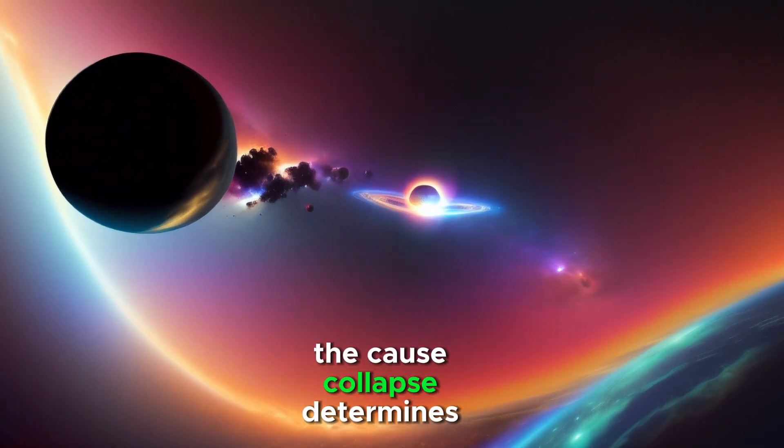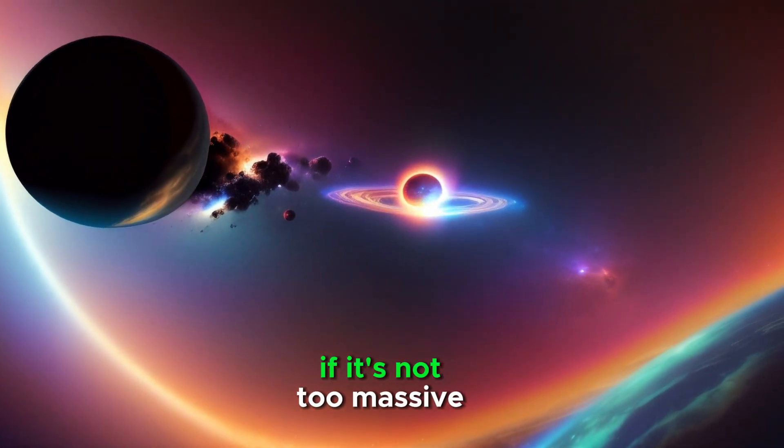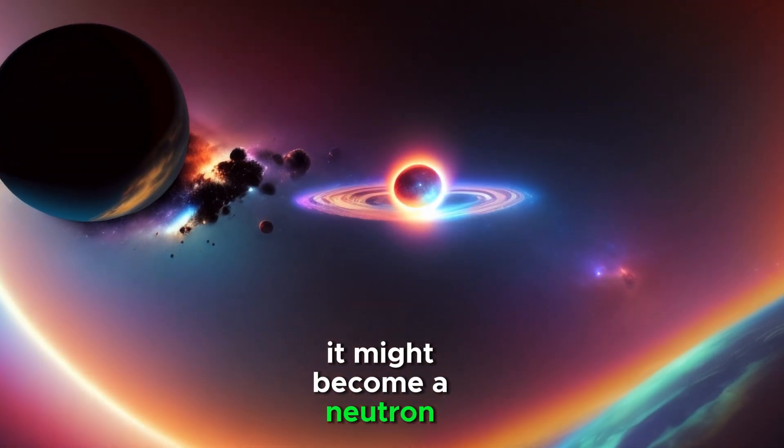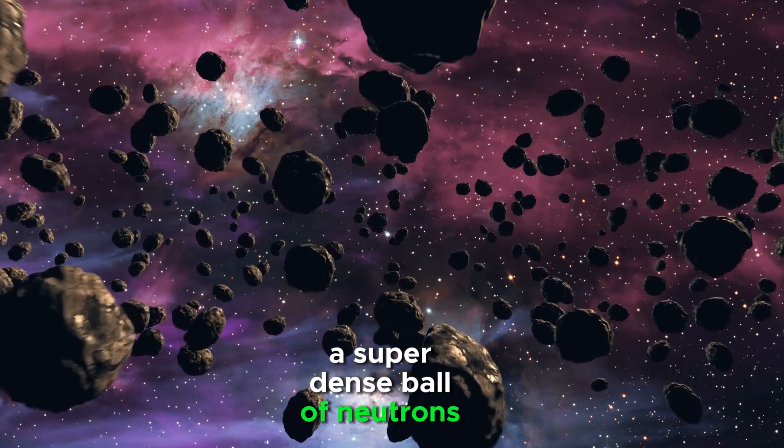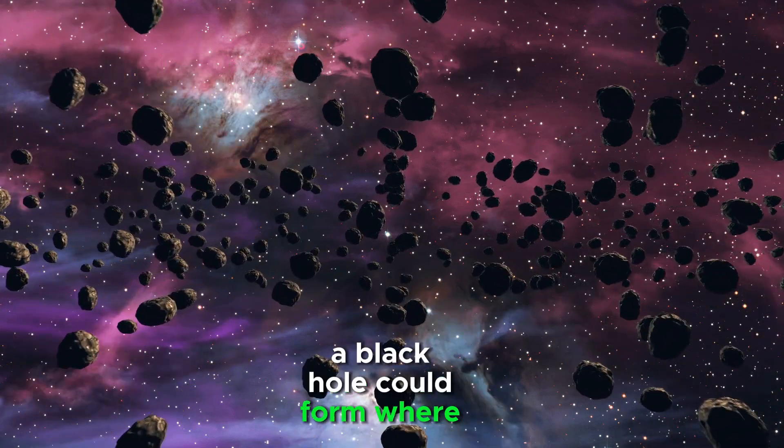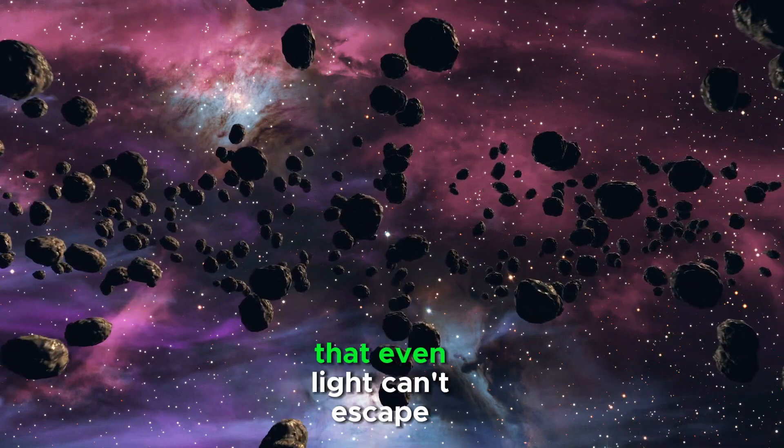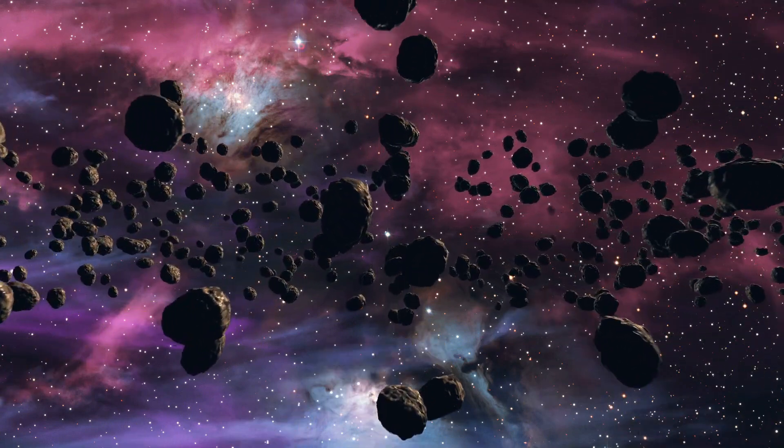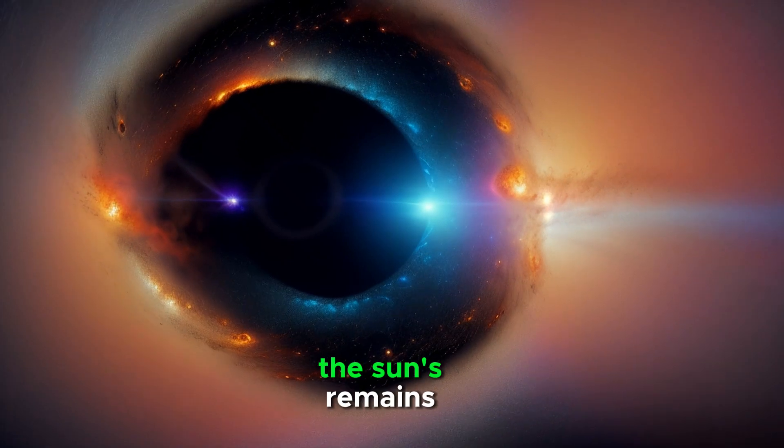The core's collapse determines the Sun's fate. If it's not too massive, it might become a neutron star, a superdense ball of neutrons. If the collapse is more extreme, a black hole could form, where gravity is so intense that even light can't escape. This process reshapes the Sun's remains.